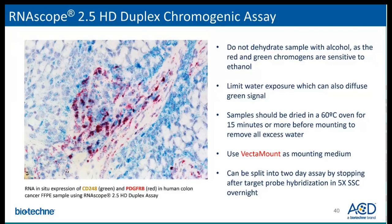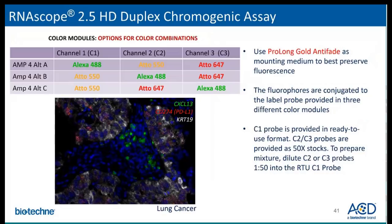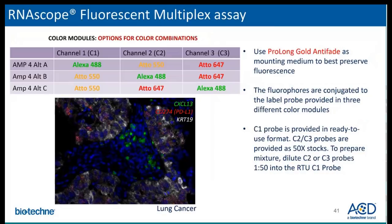Additionally, we would recommend considering splitting the duplex assay into two days due to the length of time. For the fluorescent V1 assay, you can use different fluorophore alternatives — A, B, or C — for the different fluorophore combinations as shown in the table. We recommend using ProLong Gold anti-fade mounting media to preserve fluorescence.